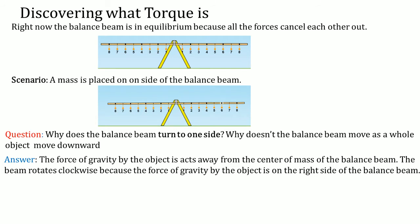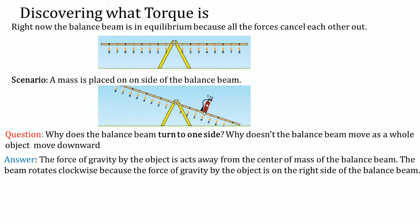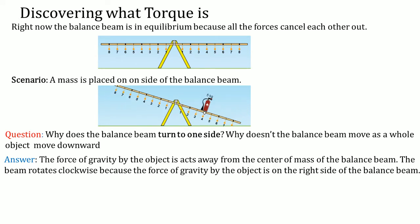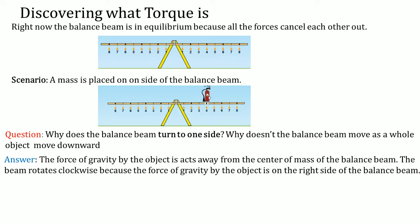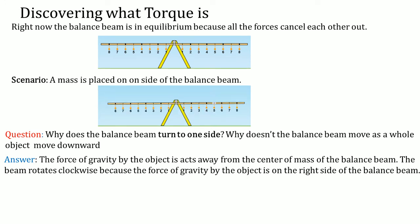The force of gravity is acting at a distance away — in the image you see it is 4 units away from the center. And it's causing the object to turn because the force of gravity is pulling it down. That rotation is clockwise because of the force of gravity pulling it down on the right-hand side of the balance beam.